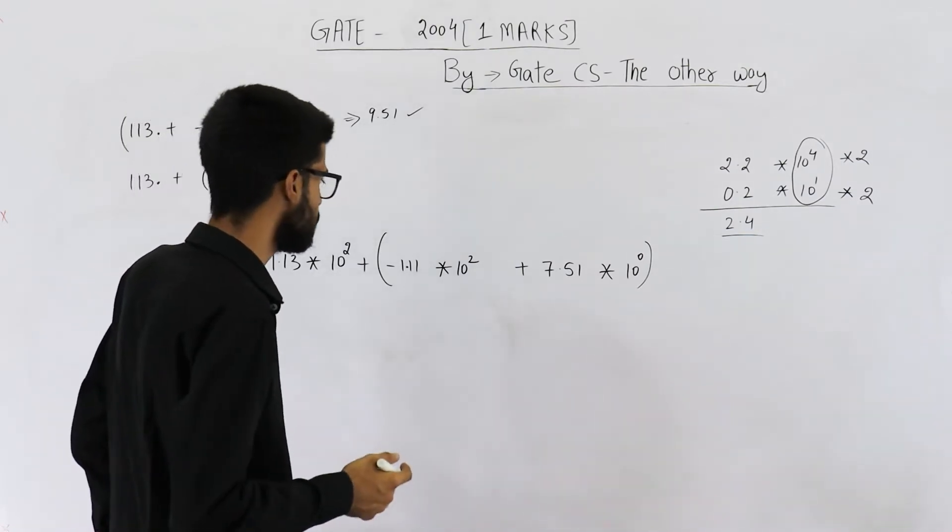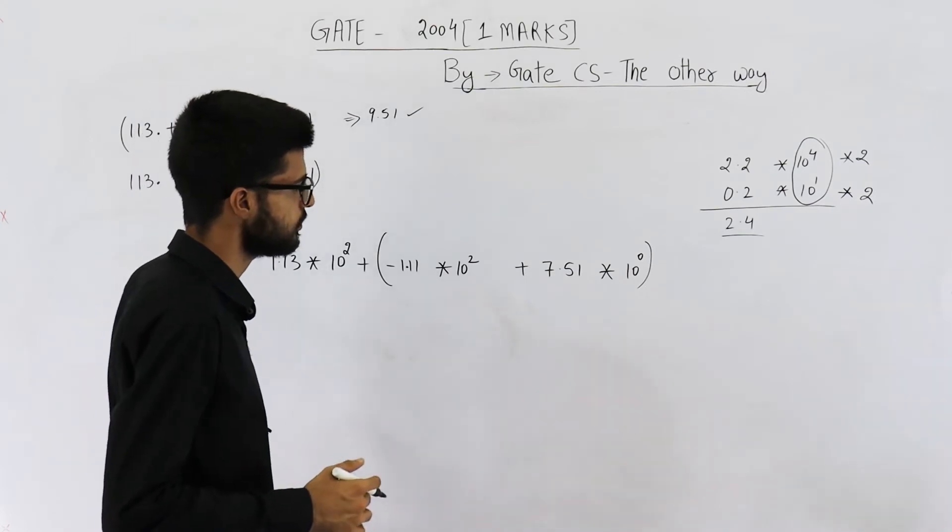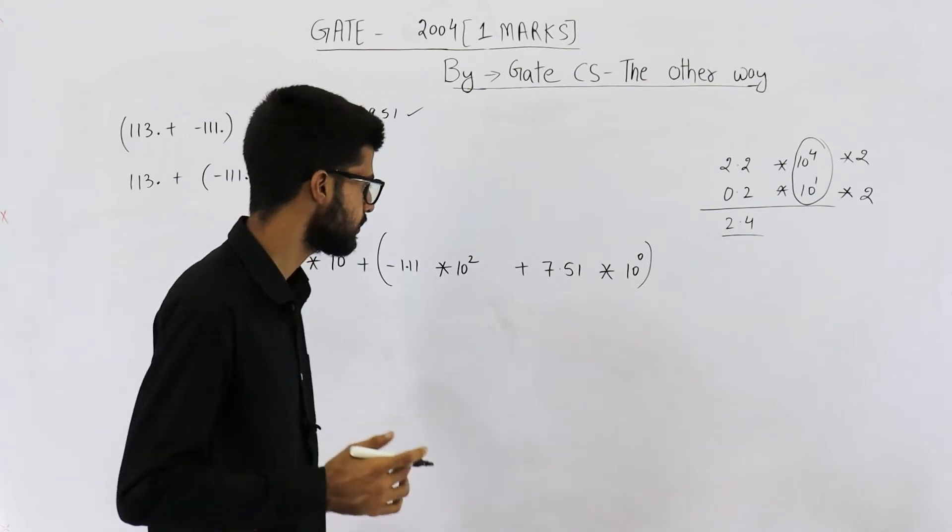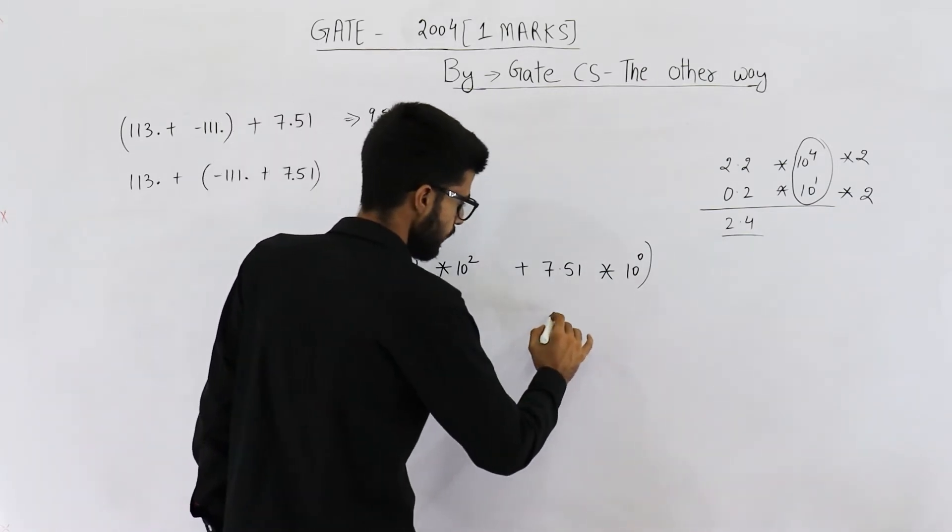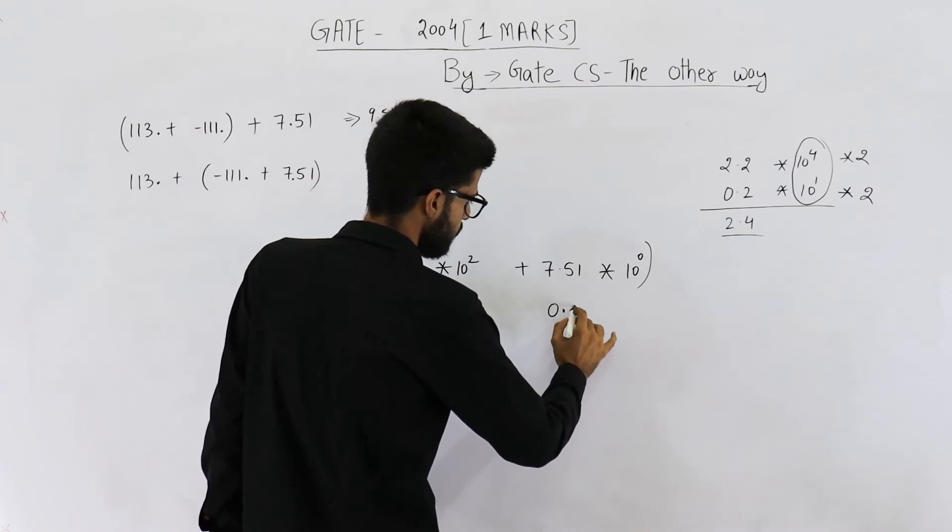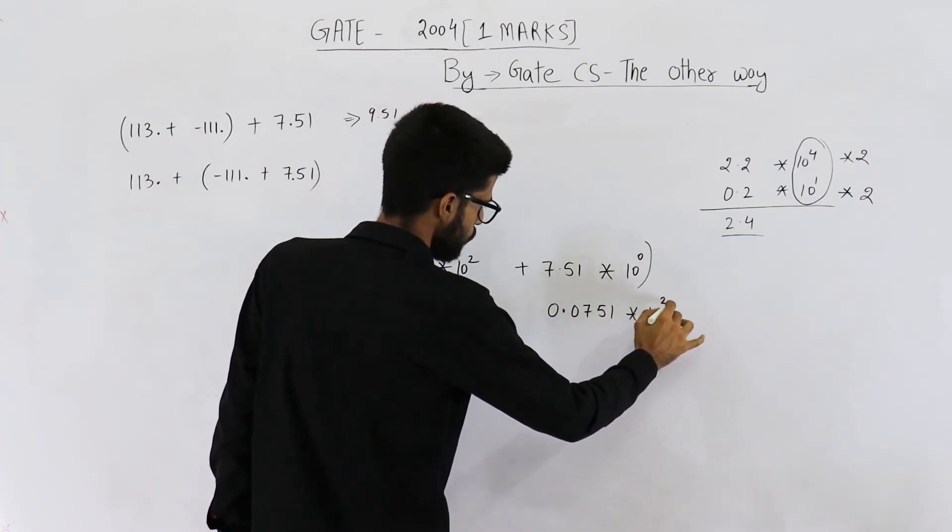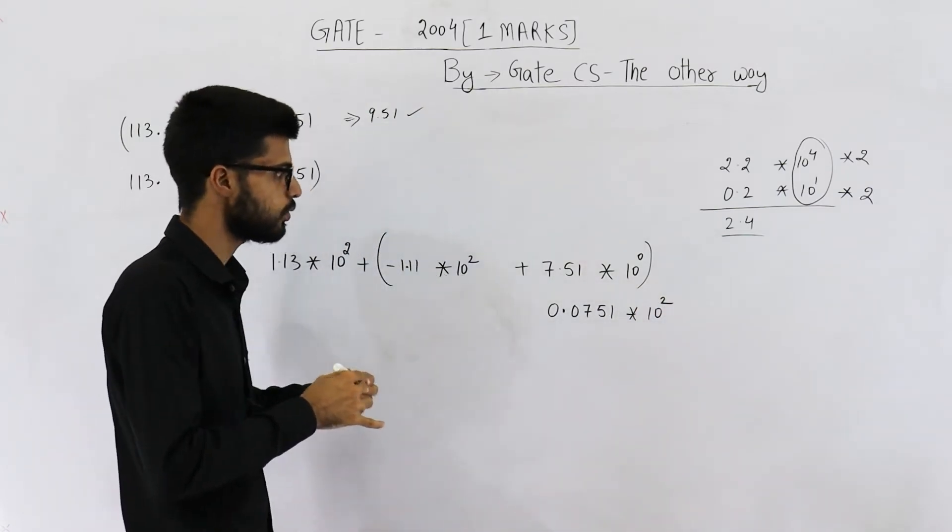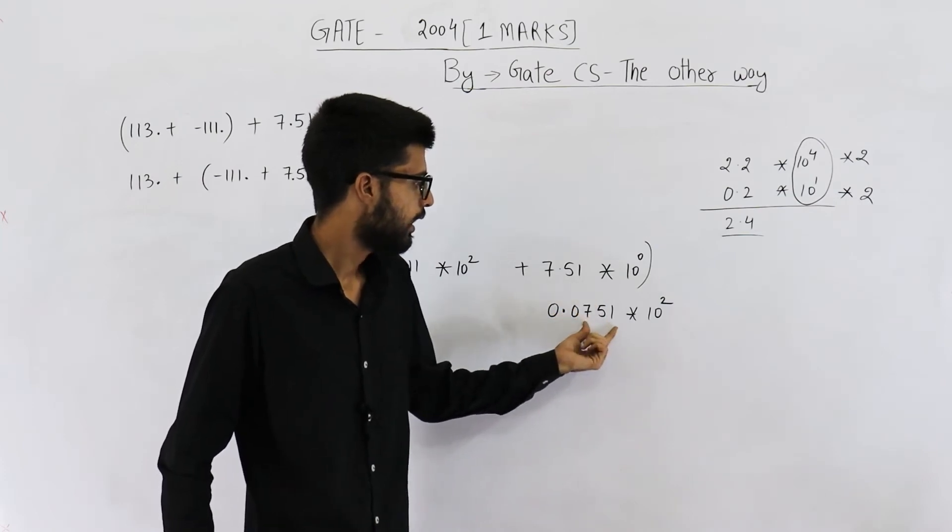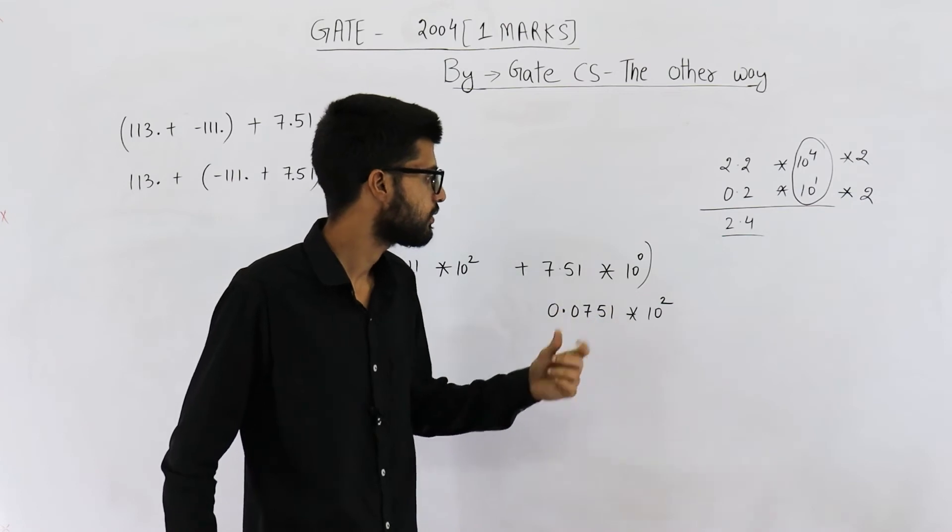So, if you make its exponent equal to 2, what is the result? Just try it yourself. You will get 0.0751 × 10². Just try to solve this. If you try to solve this, you will shift the radix point here and you will get 7.51 back. So, this can be written as this.